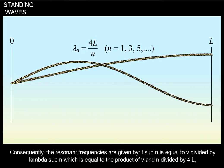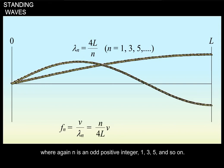Consequently, the resonant frequencies are given by f sub n equals v divided by lambda sub n, which is equal to the product of v and n divided by 4L, where again n is an odd positive integer 1, 3, 5, and so on.